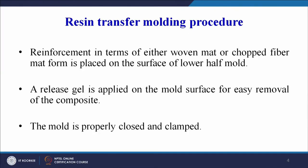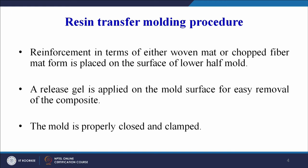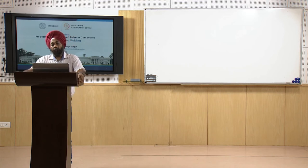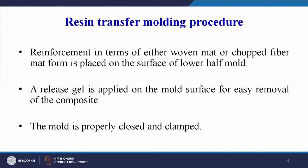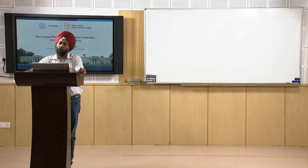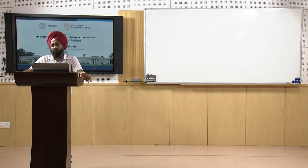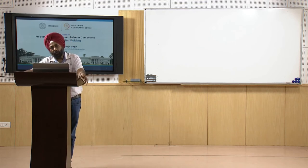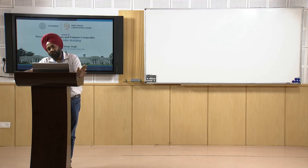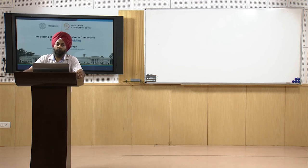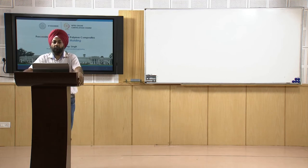Reinforcement in the form of either woven mat or chopped fiber mat is placed on the surface of the lower half of the mold. A release gel is applied on the mold surface for easy removal of the composite. This step of applying release gel is common across almost all composite processing methods, including hand layup, spray layup, compression molding, injection molding, and autoclave molding.